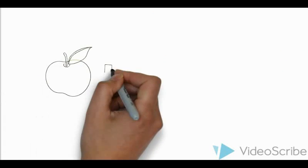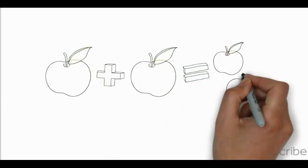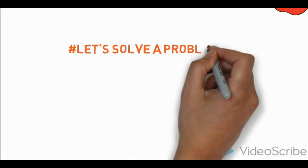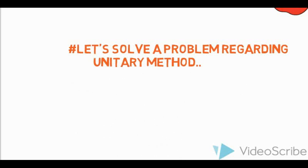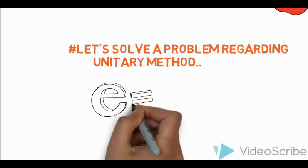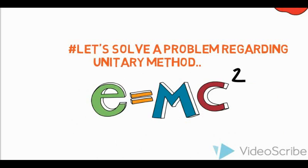You may remember the primary school mathematics in which we are taught 1 plus 1 equals 2. But we are here to talk about unitary method. So let's solve a problem regarding it. And I'll bet that it will be simpler than E equals MC squared. Just joking.